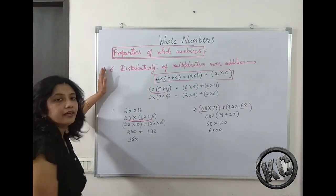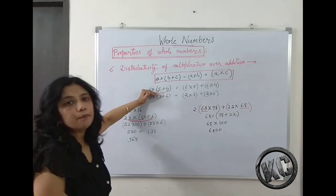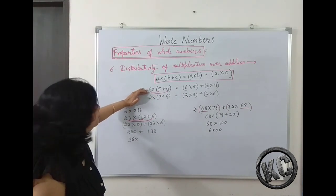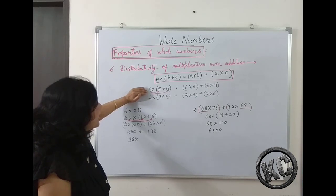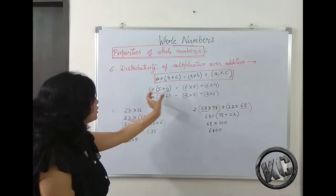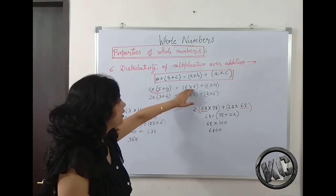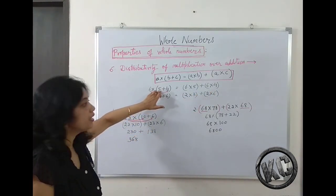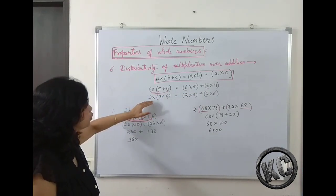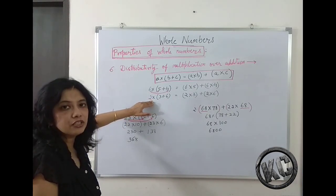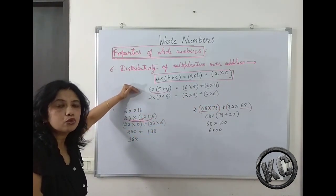Now we will study another property: distributivity of multiplication over addition. In this property, we can distribute numbers according to our convenience. For 6 multiplied by (5 plus 4), since 6 is multiplied by both 5 and 4, you can distribute it: write 6 multiplied by 5 plus 6 multiplied by 4. Similarly, for 2 multiplied by (3 plus 6), you write 2 multiplied by 3 plus 2 multiplied by 6. So you can distribute numbers to solve them more conveniently.